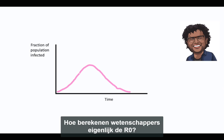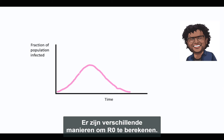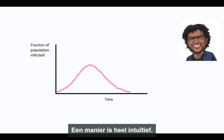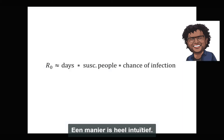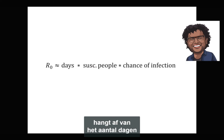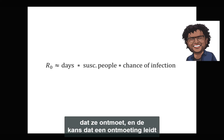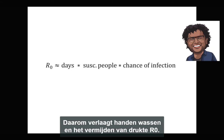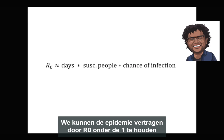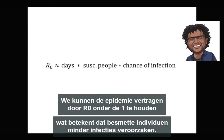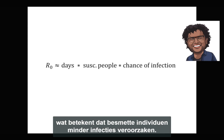So how do scientists actually calculate the R0? There are different ways to calculate R0. One way is quite intuitive: the number of people that someone infects will depend on the number of days they're infectious, the number of susceptible people that they meet, and the chance that a meeting leads to an infection. Therefore, washing hands and avoiding crowds reduces R0. We can slow the epidemic by keeping R0 below one, so that infected individuals are generating fewer infections.